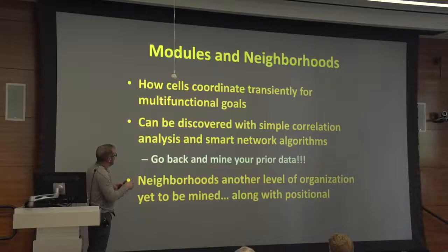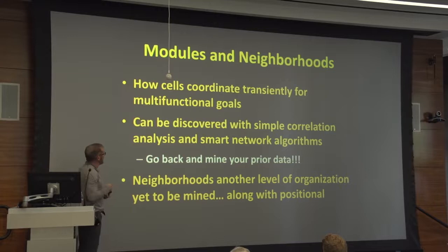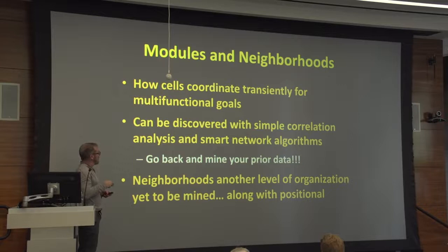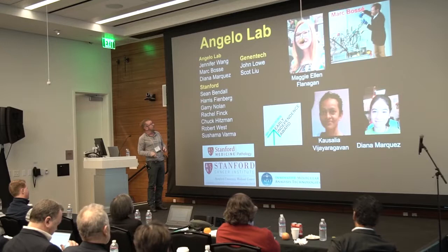Epigenetics will now be amenable to these kinds of approaches. Using all of these mathematical tools we'll be able to figure out the causality route in disease or whatever biological system is of interest. Even with simple correlation analysis, or more advanced approaches, those four or five mice that you did your experiment with — you can find these modules even if you used fluorescence, you can go back and mine this data. Neighborhoods are another level of organization. Mike Angelo's work has been the setup to get our MIBI instruments up and running at Stanford.